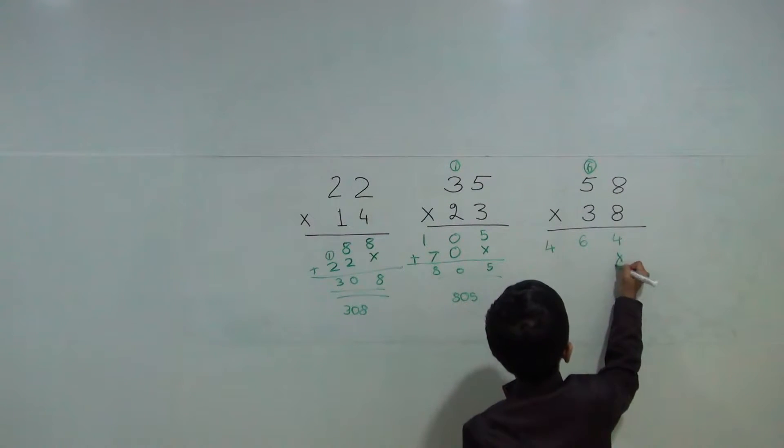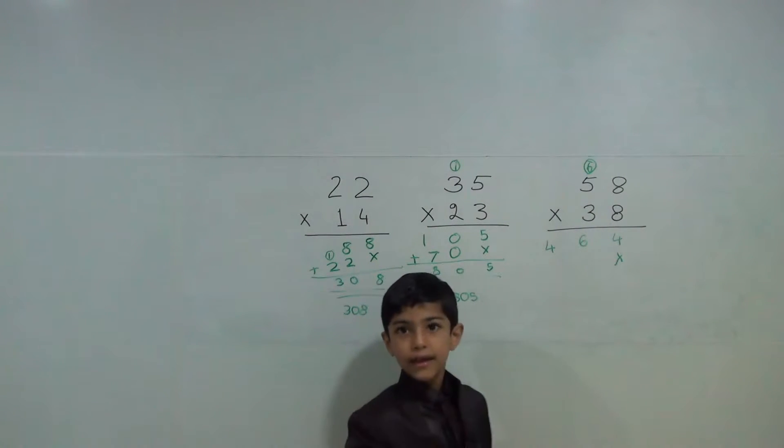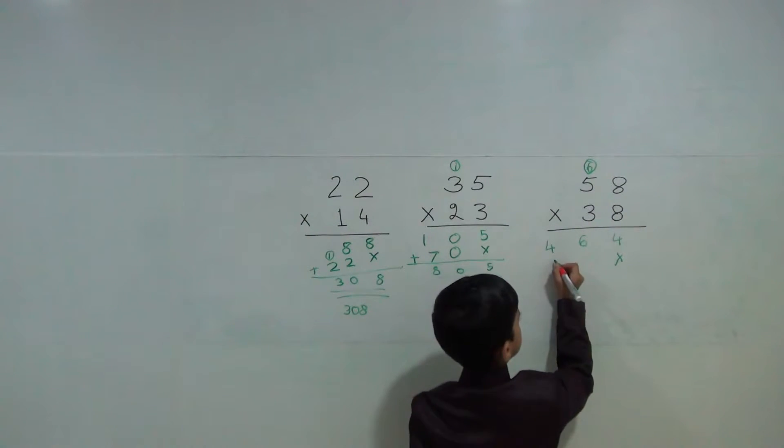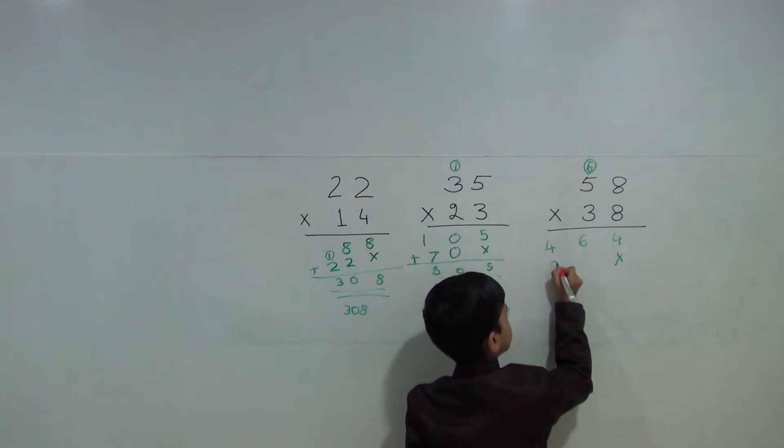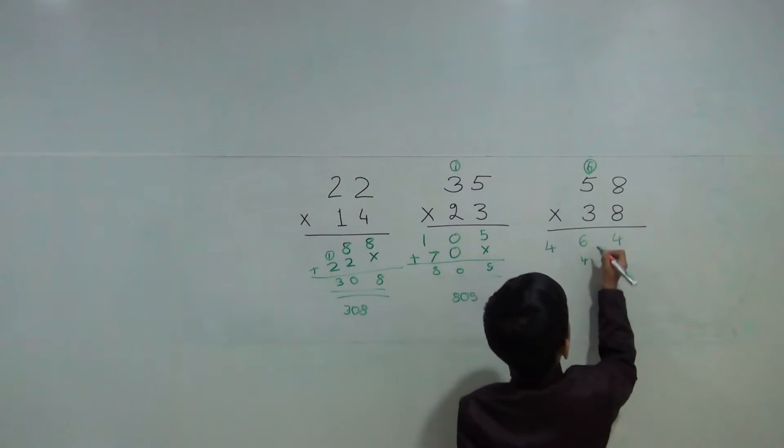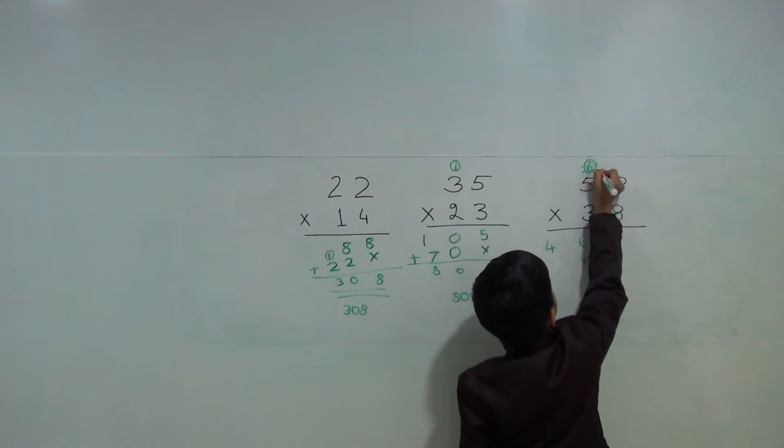Now cross. 3 times 8 are 24. So 24. 2, 4.